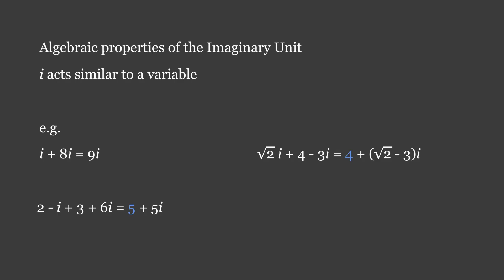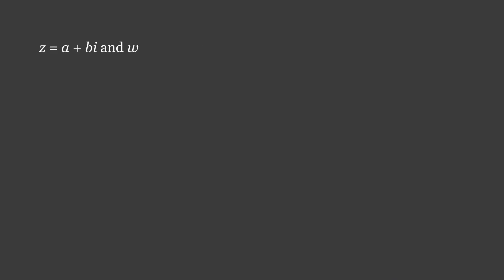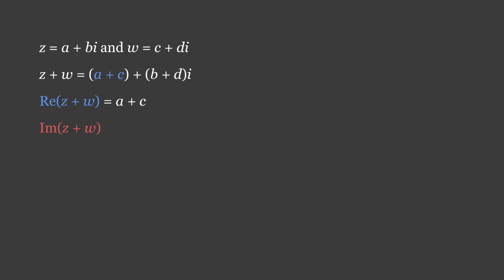We can therefore observe that the real and imaginary dimensions act independently of each other under additive operations. This is evident in the sum of two arbitrary complex numbers, z equals a plus bi and w equals c plus di: z plus w equals (a plus c) plus (b plus d)i. To denote their parts algebraically, Re(z plus w) equals a plus c, and Im(z plus w) equals b plus d. The same is true of their difference.